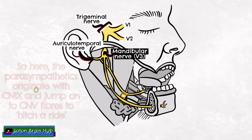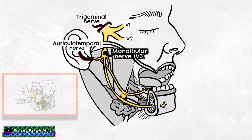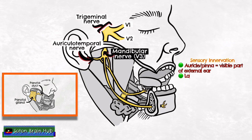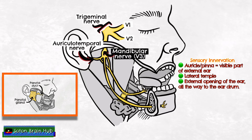The two roots of the auriculotemporal nerve innervate the anterior part of the auriculotemporal region, the lateral part of the temple, the anterior external auditory meatus, and the anterior tympanic membrane.